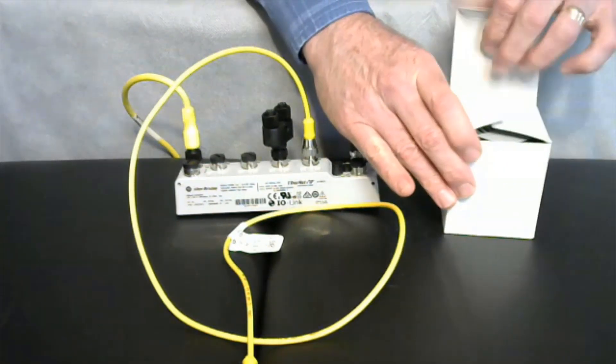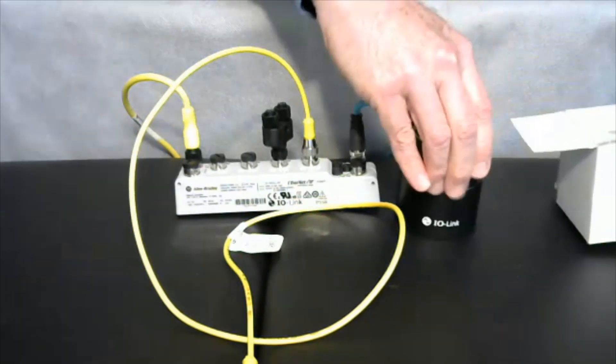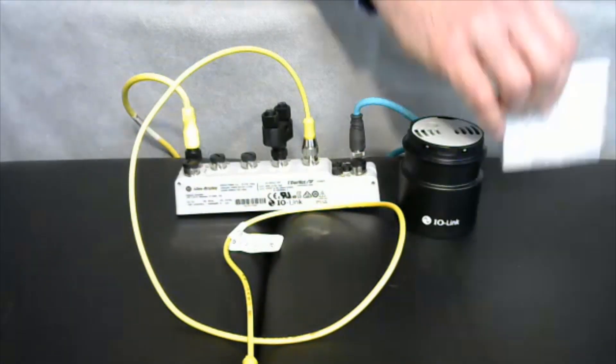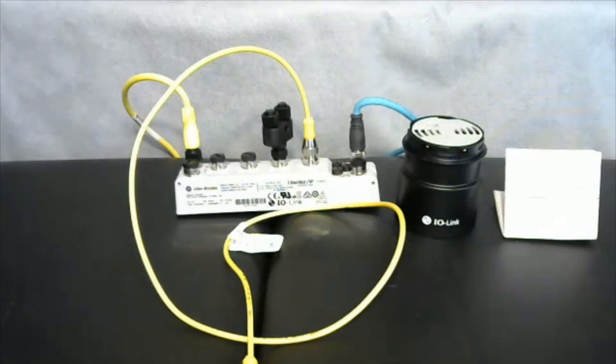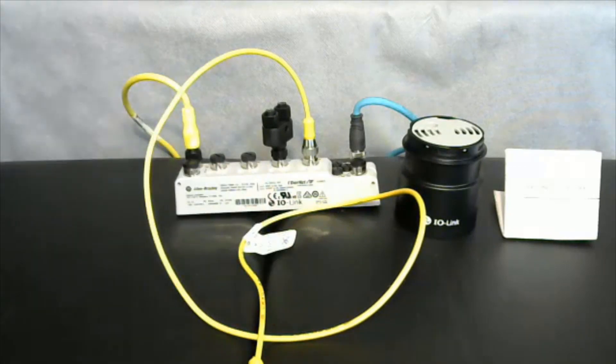The 856T Control Tower IO-Link module comes in a box that includes installation instructions. To connect it to the IP67 Armour Block IO-Link Master, a Class A to Class B patch cord is required and is available in various lengths from Rockwell Automation. The part number for this patch cable is included in the installation instructions.